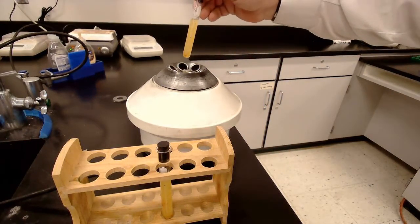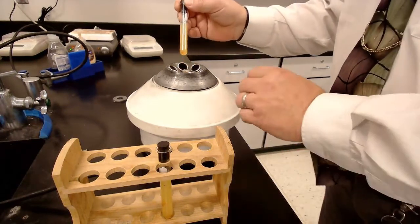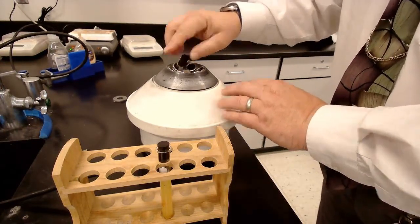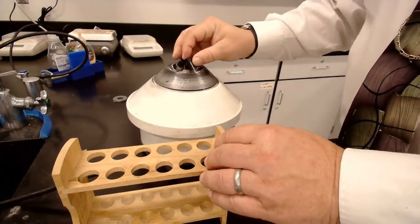So, now what we're going to do is we're going to take the Italian dressing and we're going to stick it into the centrifuge.